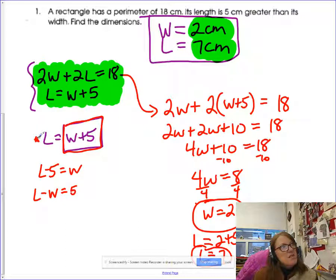I happen to choose this one and then went about solving it by substitution, substituting that in, and then you get a two and a seven for those two, two and seven.